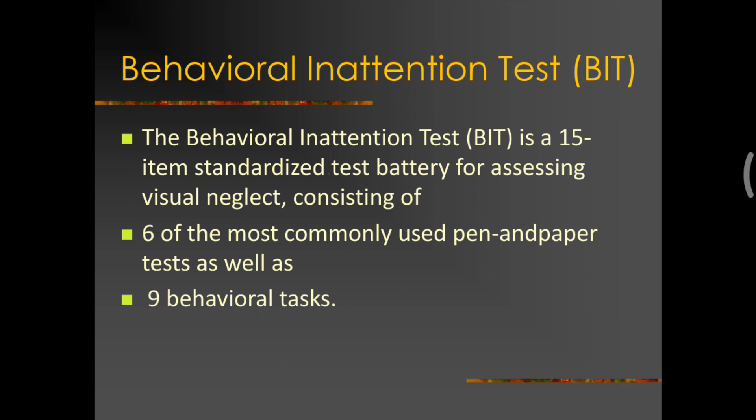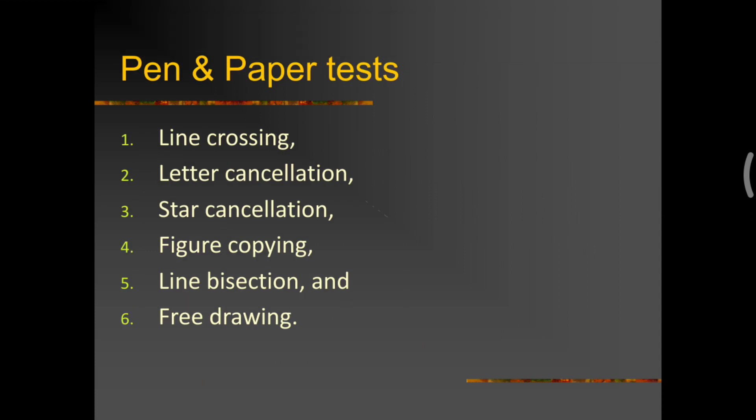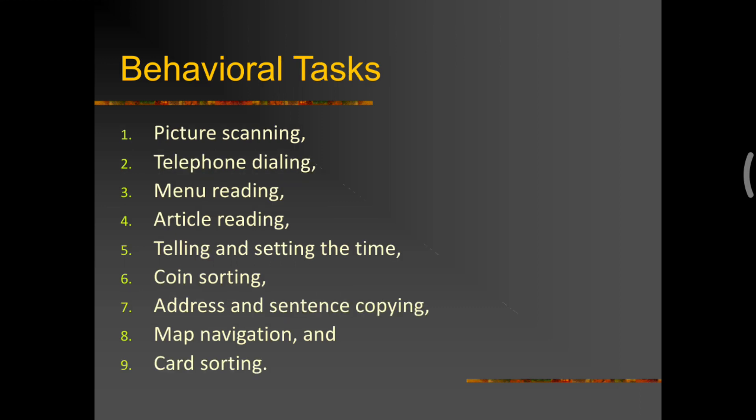The next test is a behavioral inattention test. It is basically a combination of multiple tests. It has six commonly used pen and paper tests and nine behavioral tasks. So, the pen and paper test includes what you have seen previously like line crossing, letter cancellation, etc. And the behavioral tasks include picture scanning. We give him a picture and ask him to scan it and tell us all the features of a picture. Or, say for example, article reading. We ask him to read the article and he would be consistently leaving from one half of it. So, it has many other tests. These following nine tests are there.